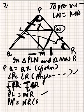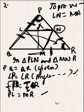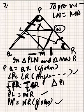Because it's given. These are the three conditions by which we can prove that triangle PLN is congruent to triangle MNR.